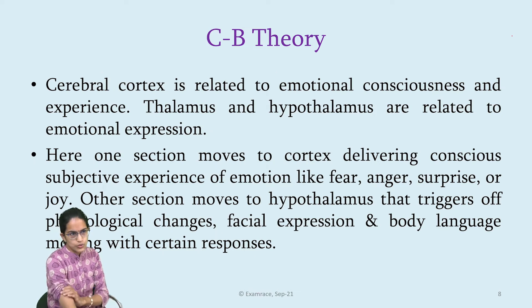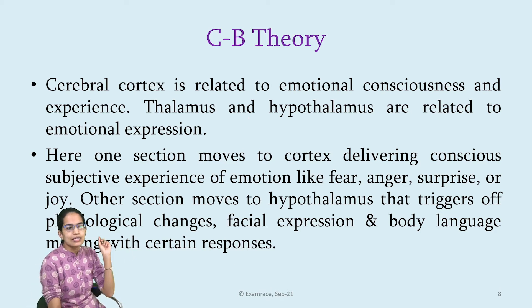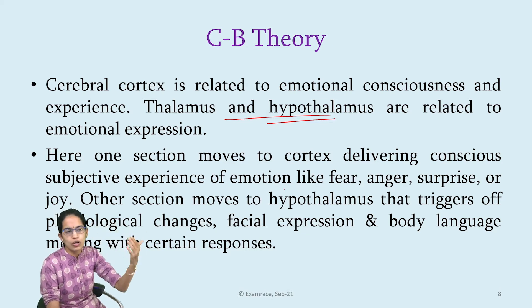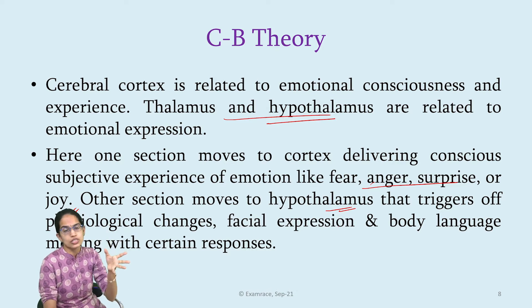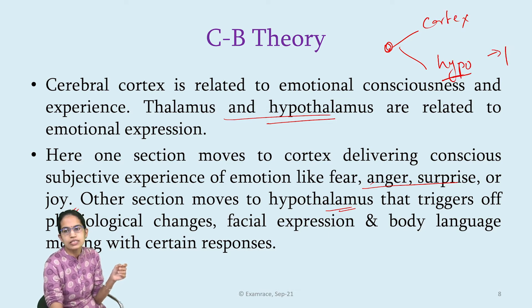According to this theory, the cerebral cortex is related to emotional consciousness, and the thalamus and hypothalamus are part of it. One section moves to the cortex, which delivers the conscious subjective experience of emotions like fear, anger, surprise, and joy. The other section moves to the hypothalamus, which triggers the physiological response. So the same information goes to two sections of the brain — the cortex and the hypothalamus. The hypothalamus brings in the physiological changes.